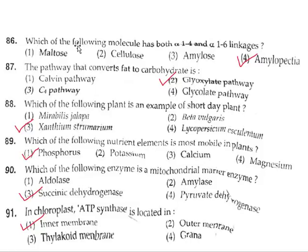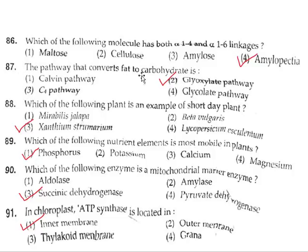Question 86: Which of the following molecules has both alpha-1,4 and alpha-1,6 linkage? The answer is amylopectin. There are chains of alpha-1,4 linkages and the cross-linking is from alpha-1,6 linkage. Question 87: The pathway that converts fat to carbohydrate is the glyoxylate cycle or glyoxylate pathway. So the correct answer is option 2.